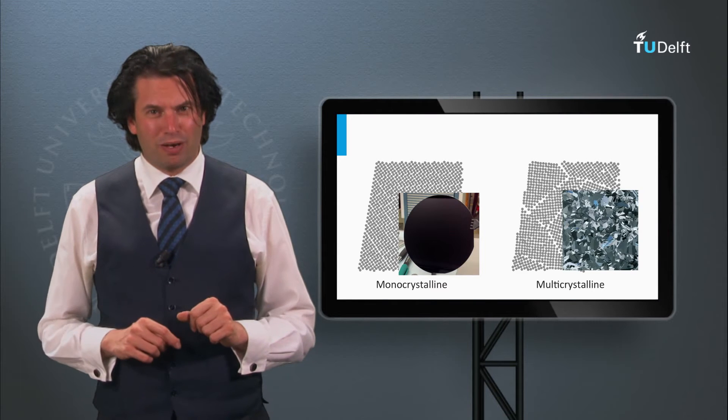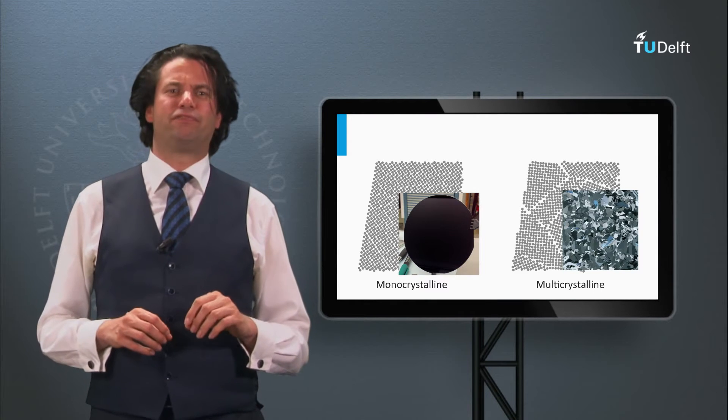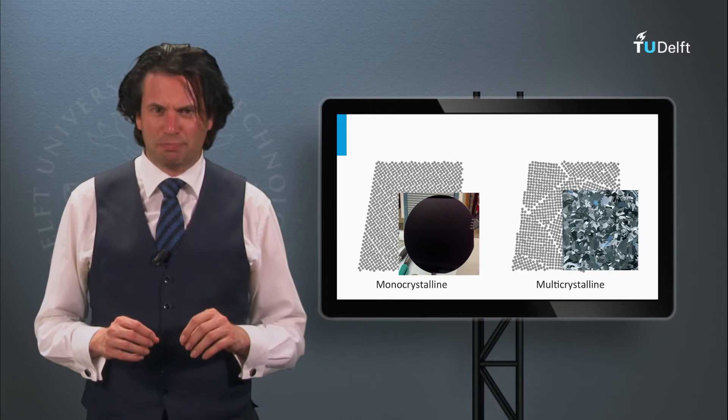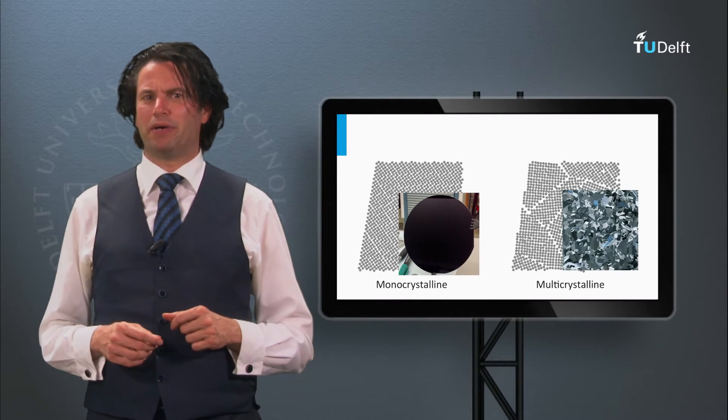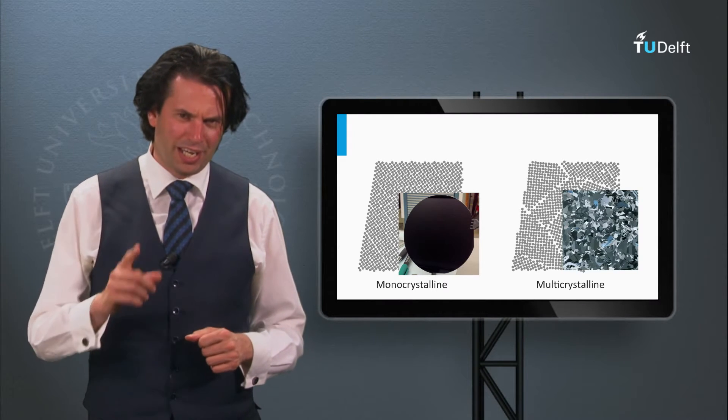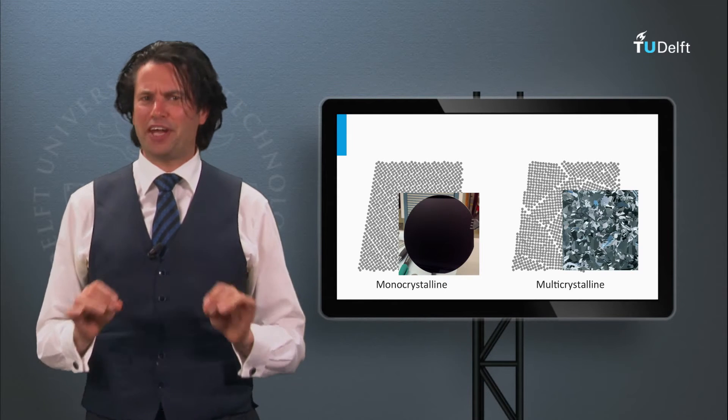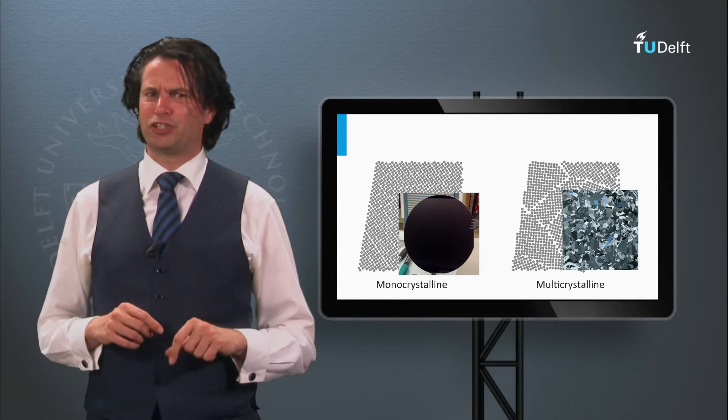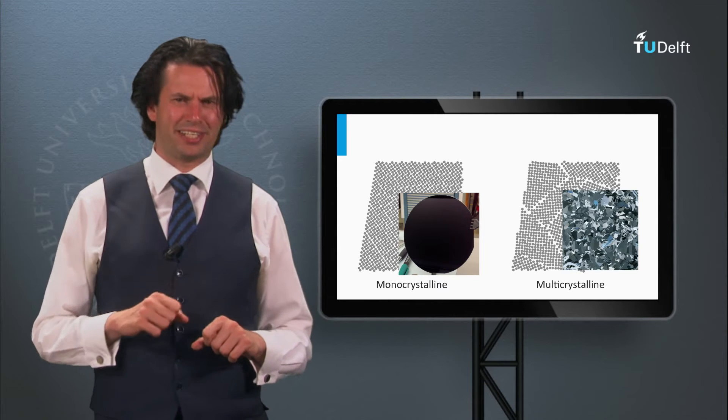In the previous block we discussed various technological aspects on crystalline silicon wafer-based PV technology. In this block I will give you three examples of highly efficient solar cells based on crystalline silicon wafers.